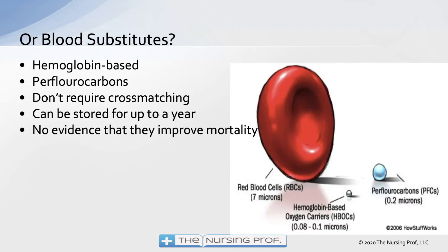Blood substitutes are being researched, including hemoglobin-based oxygen carriers and perfluorocarbons. They don't require cross-matching since they aren't living red blood cells, and they can be stored for up to a year. Because they are smaller than red blood cells, they may reach tiny or clamped-down blood vessels — potentially useful in myocardial infarction with occlusion — but there is currently no evidence that they improve mortality, and they are very expensive.